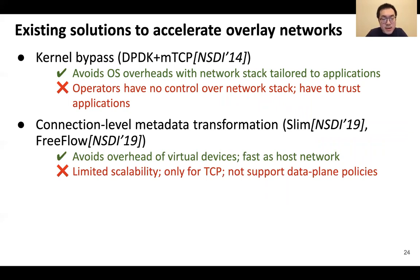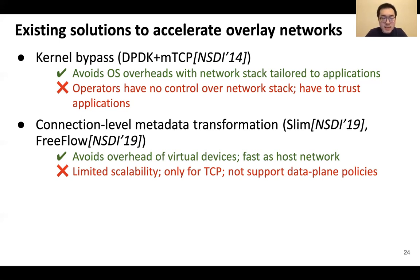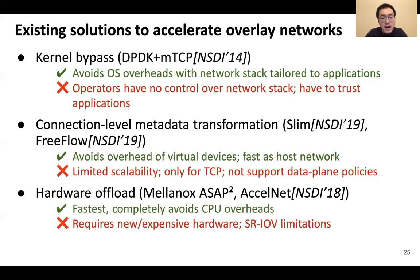In another kind of design like SLIM, it creates a new connection-level metadata transformation protocol. With this customized protocol, we can avoid the overhead of additional virtual devices and the prolonged data path. It is fast, but this design has some limitations like limited scalability and limited support for enforcing network policies. The last kind of solution is hardware offloading. For example, Catapult from Microsoft deploys state-of-the-art FPGA-based smart NICs in their data center to offload the most CPU-intensive network processing tasks onto customized hardware. But this kind of solution usually requires expensive hardware.